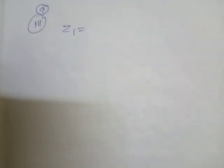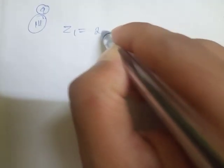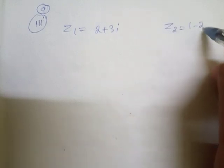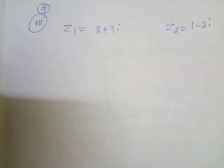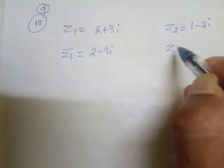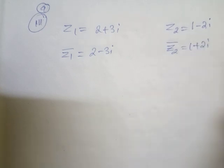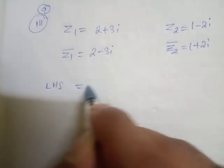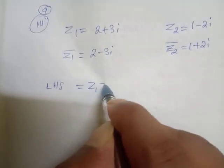For Roman 3, the given part: z1 = 2 + 3i, z2 = 1 - 2i. Therefore z1 bar = 2 - 3i and z2 bar = 1 + 2i. So LHS will be z1·z2 whole bar.